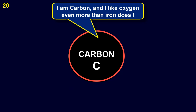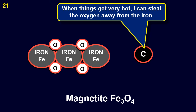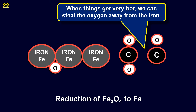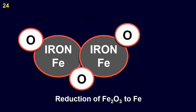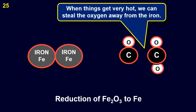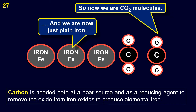Carbon has a greater affinity for oxygen than iron does. At very high temperatures, carbon will remove oxygen from the iron oxide. This is called the reduction of iron ore in the form of magnetite. The same process occurs with hematite Fe₂O₃ — this is called the reduction of iron ore in the form of hematite — to pure elemental iron. Carbon is needed both as a heat source and as a reducing agent to remove the oxide from iron oxides to produce elemental iron.